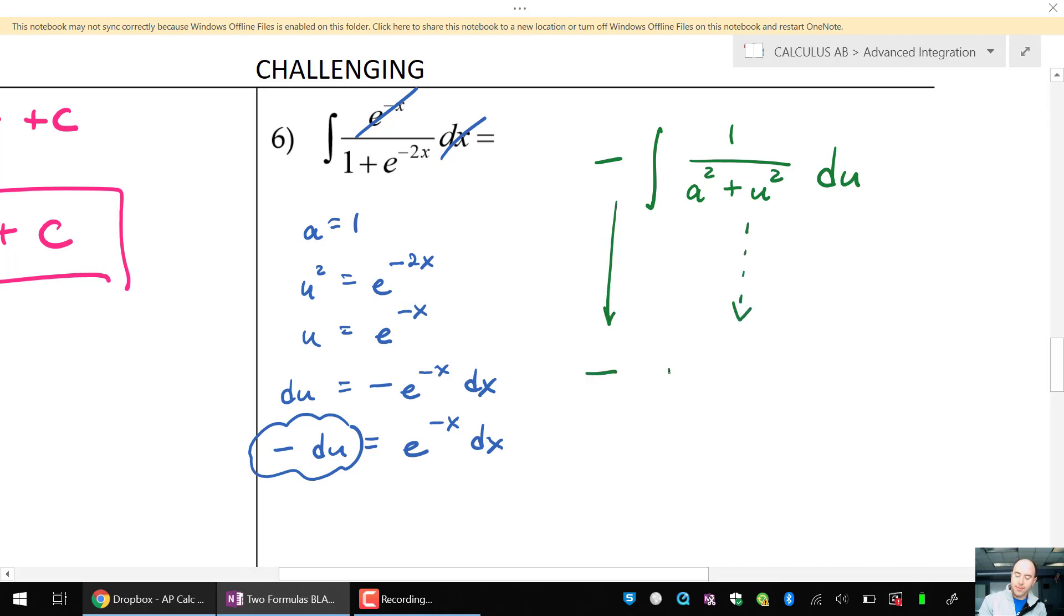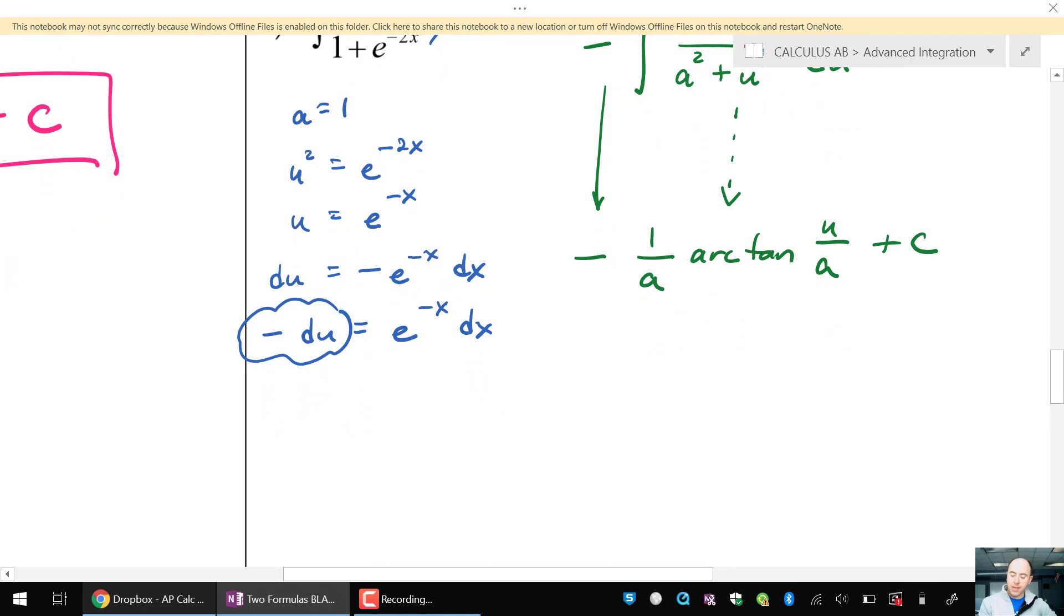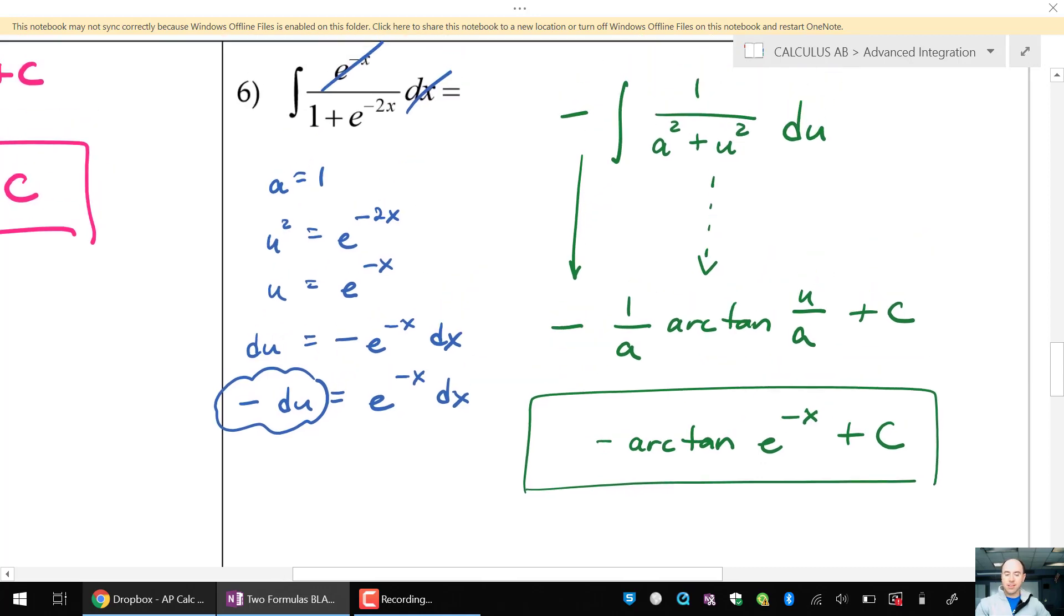Carry down your negative. All of this is arctangent. And the formula, by the way, is 1 over a, arctangent of u over a plus c. Let's plug in our values for a and our function of u. So negative 1 over 1, arctangent of e to the negative x over 1. And there we have it. Negative arctangent of e to the negative x plus c.